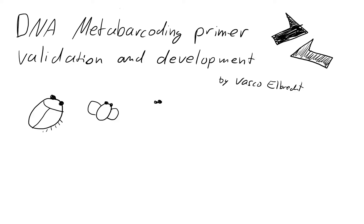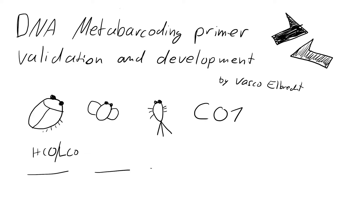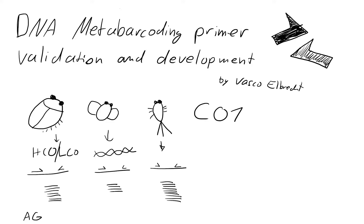Let's get started with the normal barcoding approach because it's a bit more simple. We have three specimens of different insect species that we want to barcode, so we use a CO1 barcoding region typically, with primers like HCO and LCO to amplify DNA from all three organisms. DNA is extracted and the barcoding region is amplified, giving amplicons that can be Sanger sequenced to get the nucleotide sequence for each specimen to identify it against a reference database.